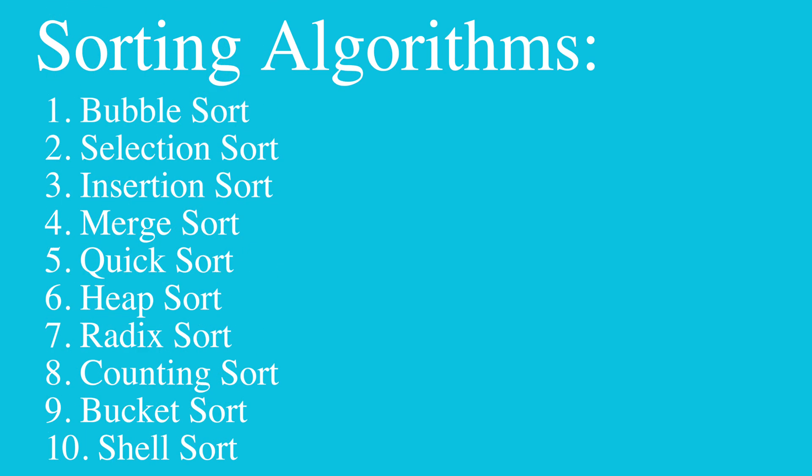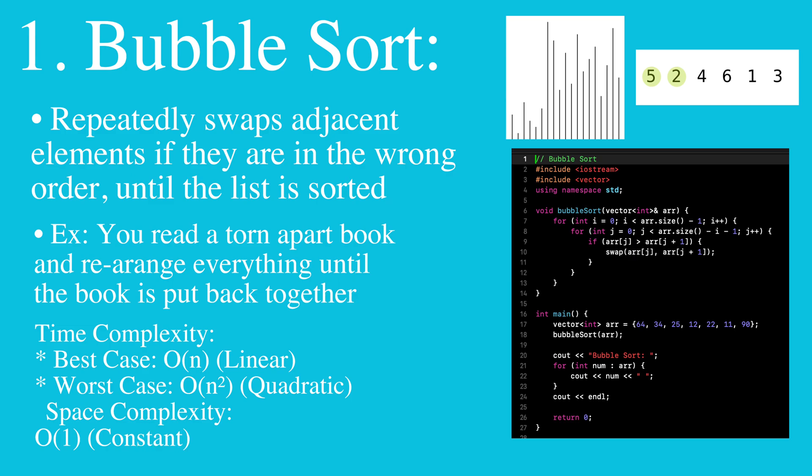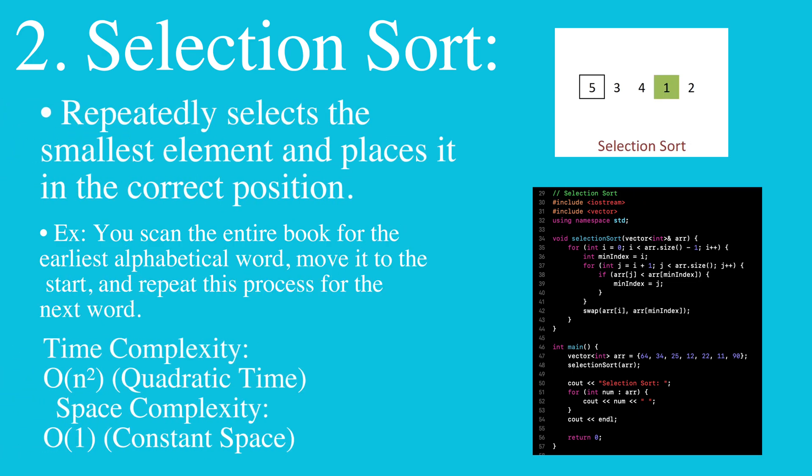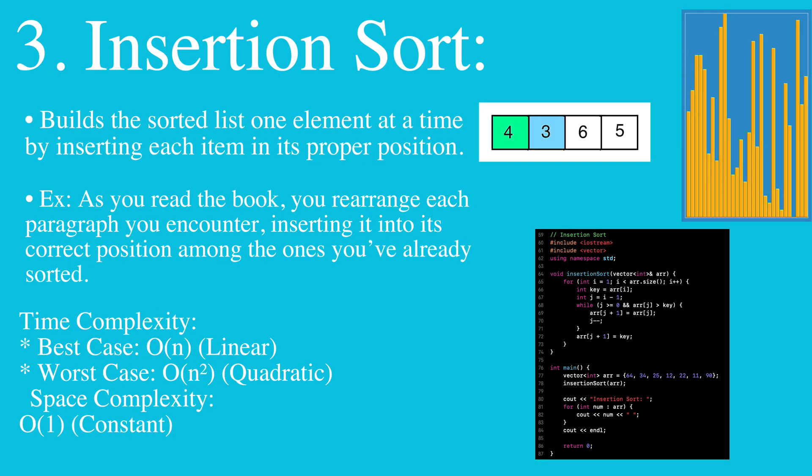And these are the 10 sorting algorithms we'll go over. In bubble sort, we are repeatedly swapping adjacent elements if they are in the wrong order until the list is sorted. Then we have selection sort, where we repeatedly select the smallest element and place it in the correct position. Then we have insertion sort, where we build the sorted list one element at a time by inserting each item in its proper position.